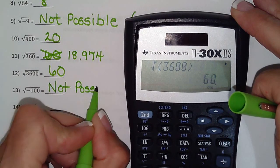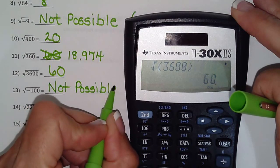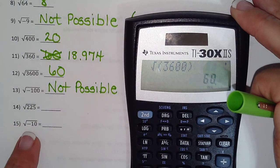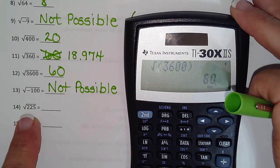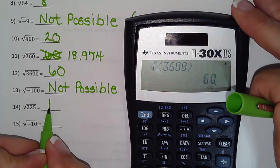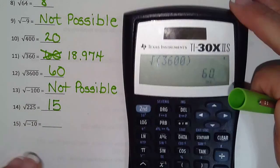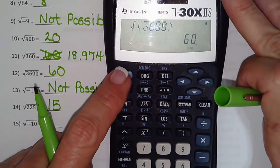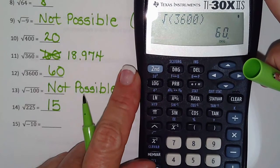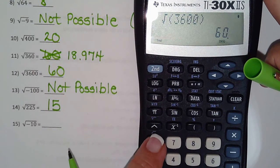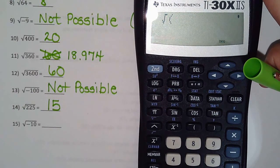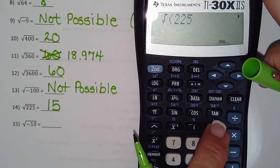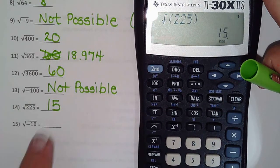And 225, that's 15, because 15 times 15 is 225, but if you don't know it, you can hit second, x squared, 225, close your parenthesis, 15 it is.